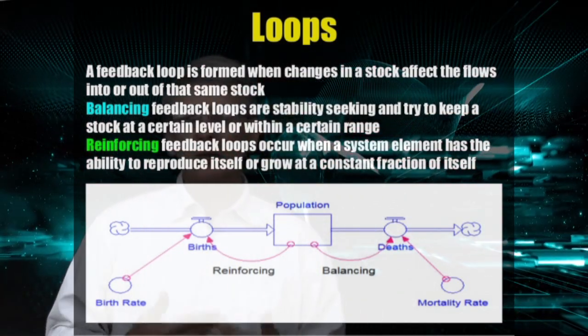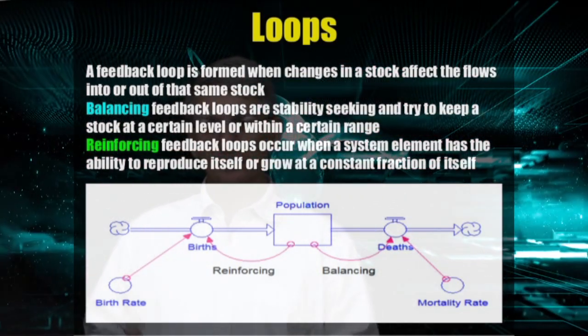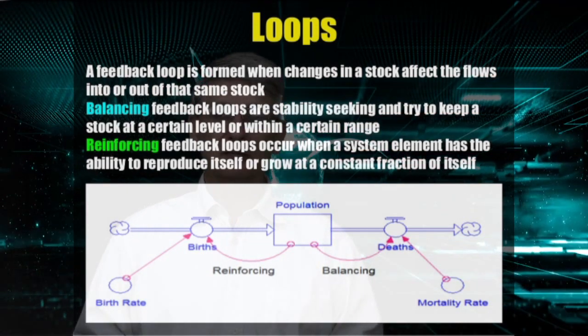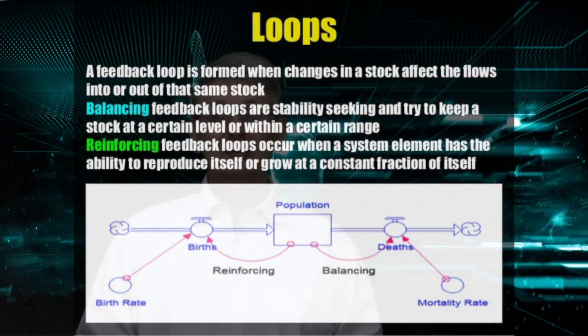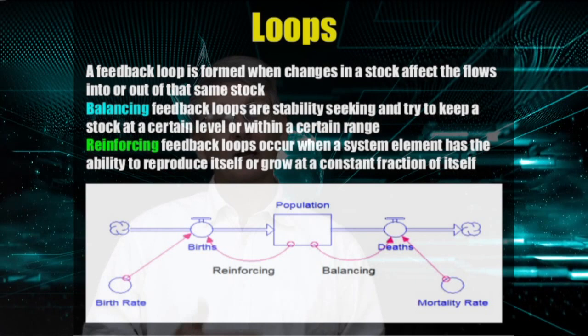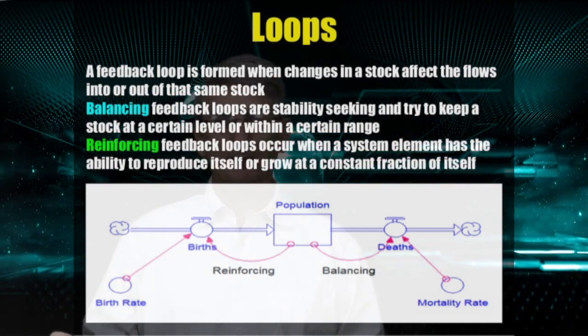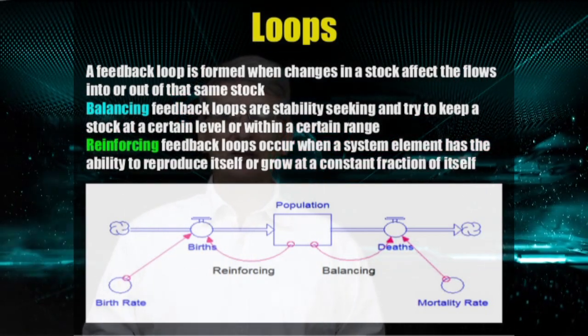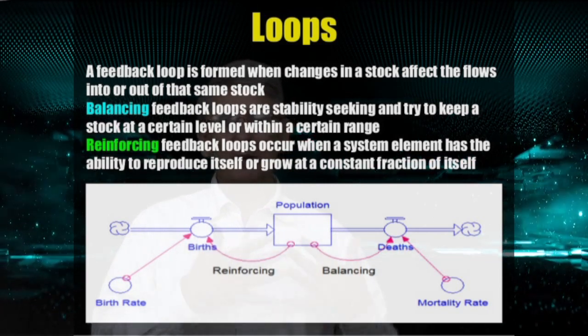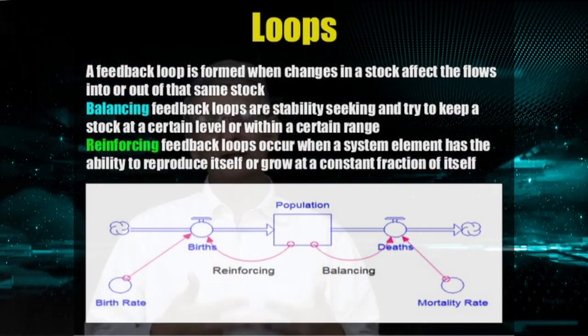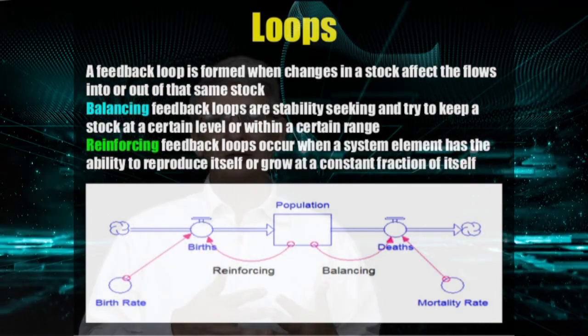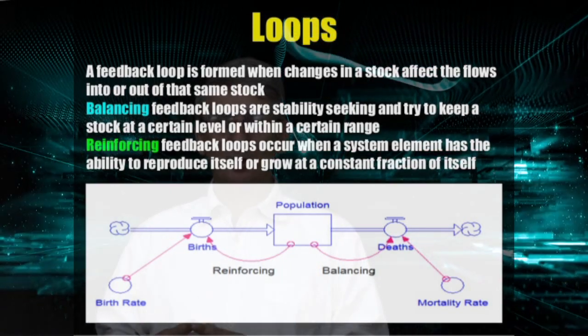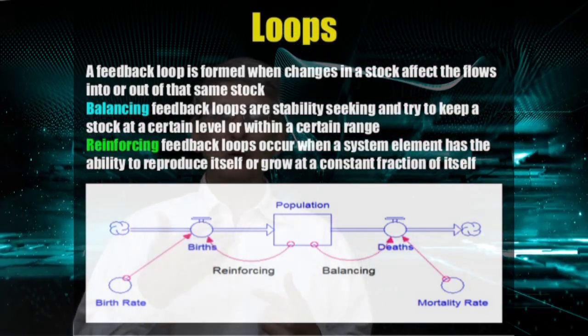In this example, the more the population stock increases, the greater the births, and the greater the subsequent increase in population stock. A reinforcing loop. But the death rate acts as a balancing loop. The greater the population, there is also an increase in deaths. But as this decreases the population stock, it acts to regulate the flow of deaths.